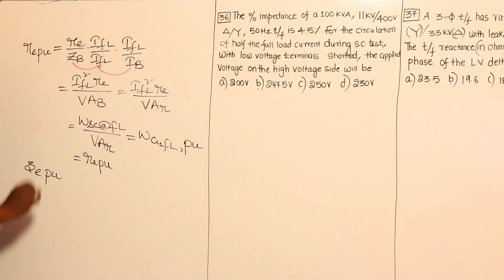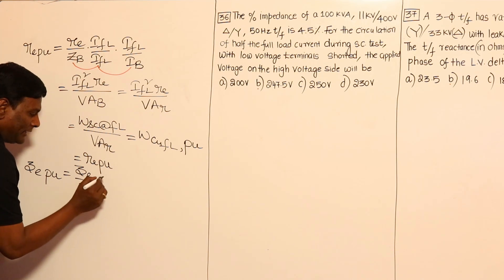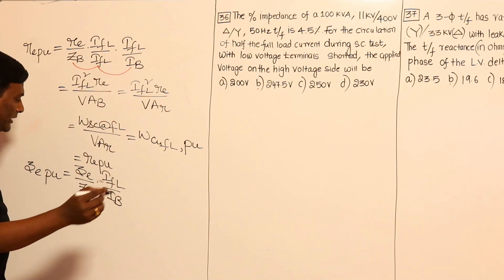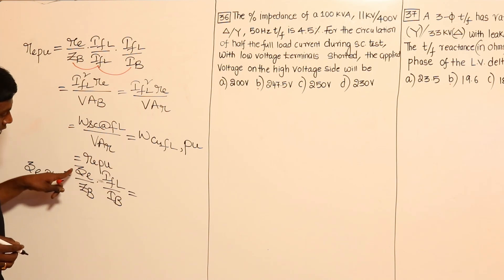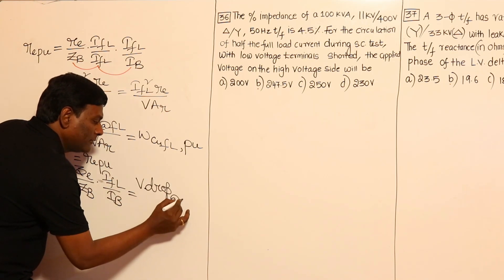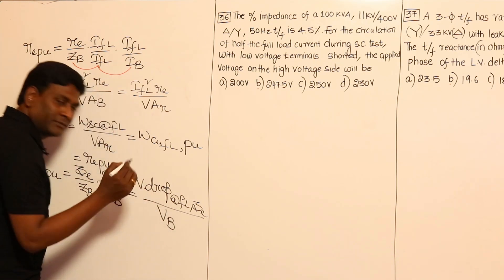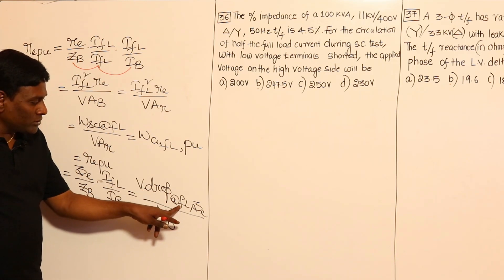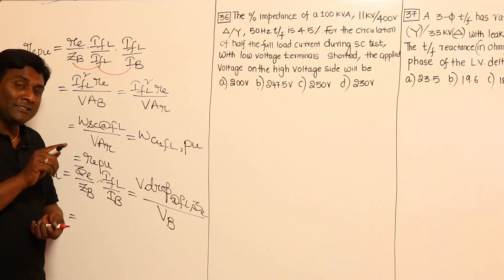Next, let us derive ZE per unit. ZE per unit equals ZE in ohms divided by Z_base. Adding IFL divided by I_base — since IFL equals I_base — ZE × IFL gives the voltage drop across the leakage impedance at full load conditions. So this is voltage drop at full load conditions across ZE divided by Z_base × I_base, which equals V_base, which is V_rated. This voltage is the short circuit voltage, provided the SC test is conducted at full load.